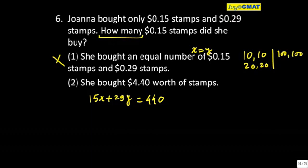Let's try to see whether I can get the answer from this statement alone. Why are you given these numbers 15, 29, and 44? There is a reason — the GMAT does not believe in calculations at all. Since 15 plus 29 is 44, we know that 10 and 10 is one definite solution.